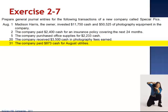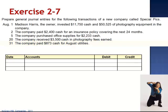August 31st, the company paid $873 cash for August utilities. The journal entry is a debit to the expense account Utilities Expense for $873. Remember that expenses decrease equity, which is why they have normal debit balances, and a credit to cash for $873 decreasing the asset cash. This transaction affects both the income statement, reducing income by $873, and the balance sheet.